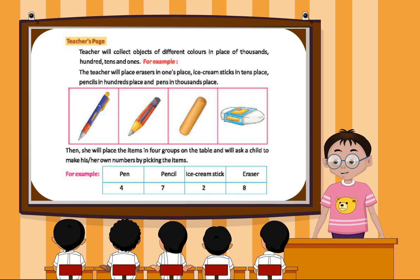Then she will place the items in four groups on the table and will ask the child to make his or her own numbers by picking the items. For example,